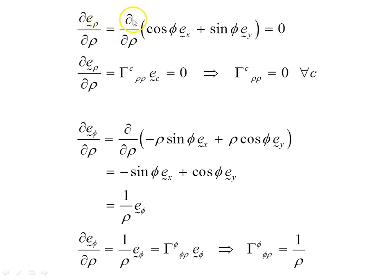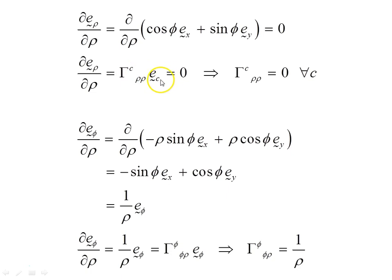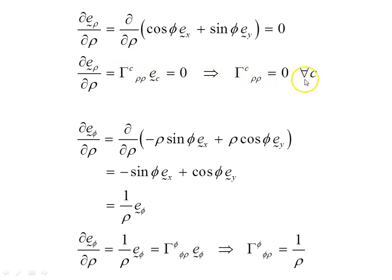The next case: d(e_rho)/d(rho). Well, d/d(rho) of e_rho is zero. So d(e_rho)/d(rho) equals a sum of Christoffel symbols times basis vectors. Since this whole expression is zero and the basis vectors are not zero, all the Christoffel symbols in this sum must be zero for all values of c.